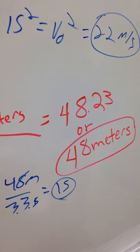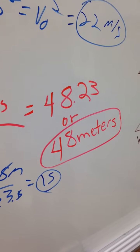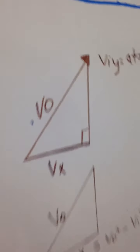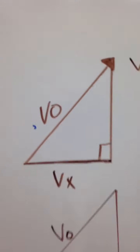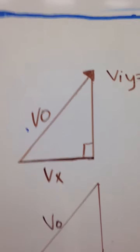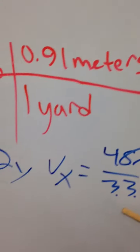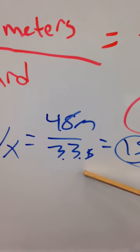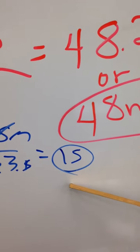Now, we are trying to figure out the V-naught of the equation because it's the initial velocity component. So, we took 48 meters over 3.3 seconds. We got 15 for the X component.